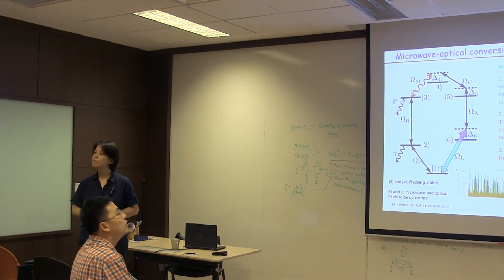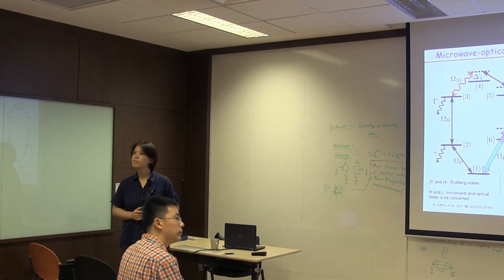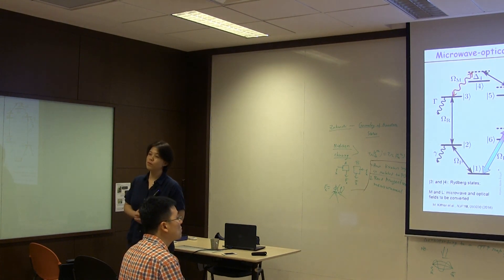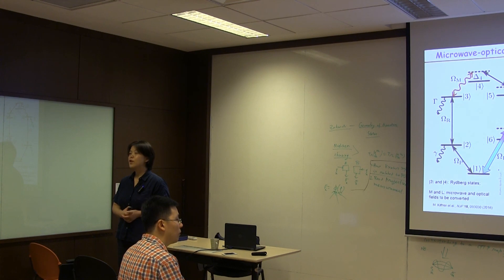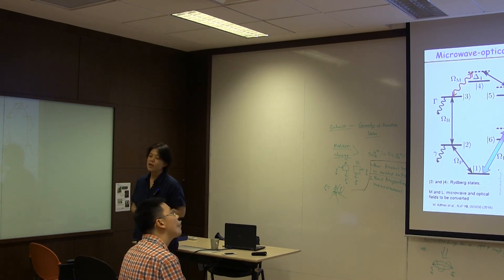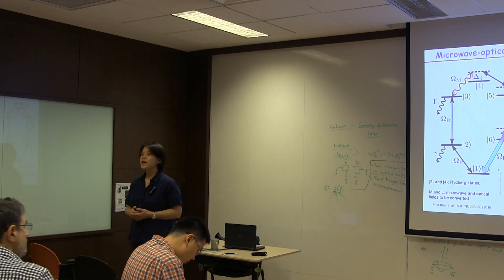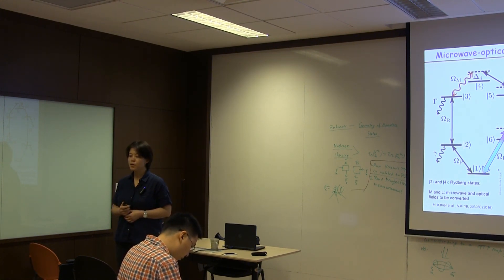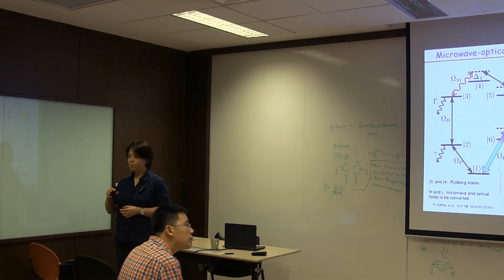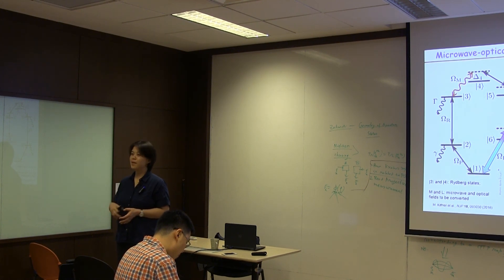Question: How do you detect the microwave or terahertz radiation you generate? Answer: It depends on the frequency range. For a few terahertz or a few tens of terahertz, the radiation can almost propagate in free space. There are terahertz detectors available depending on the frequency range. Another way is to use a Rydberg atom cell itself as a terahertz detector — you place it nearby and convert it back, essentially performing detection.